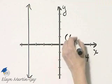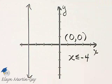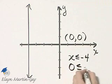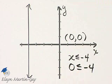And I'll try the point with coordinates 0, 0, just because it's a simple point to plug into these values. If x is 0, I'll have 0 is less than or equal to negative 4. That's either true or false.